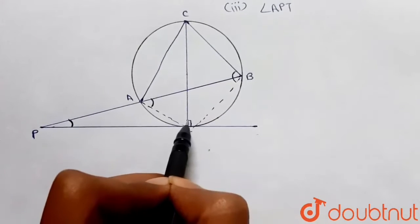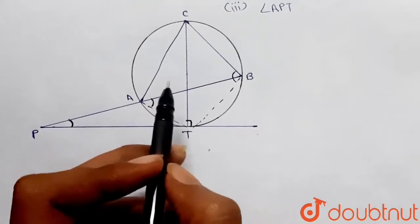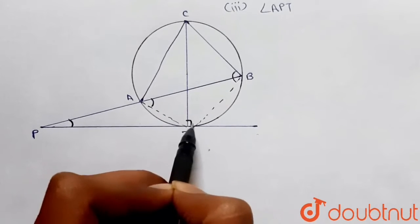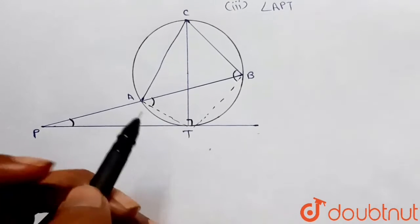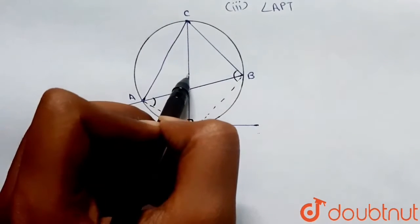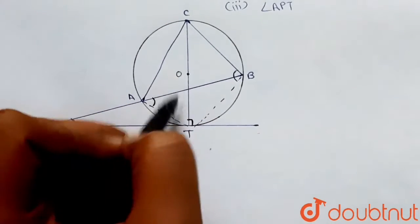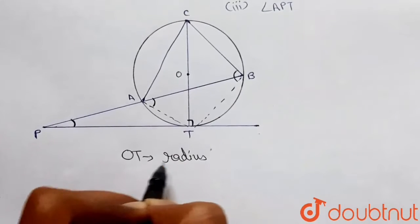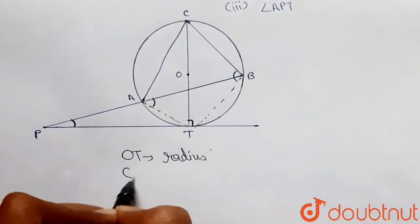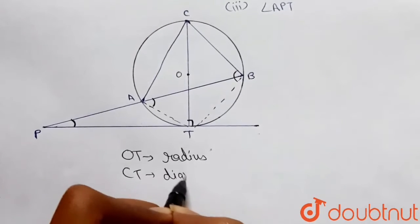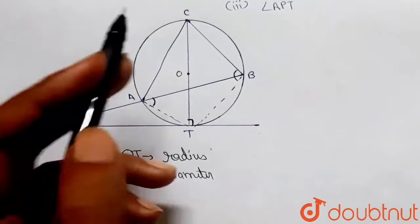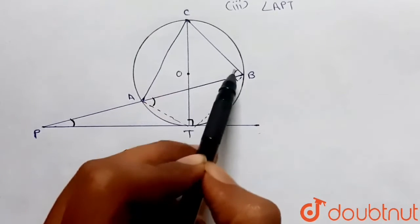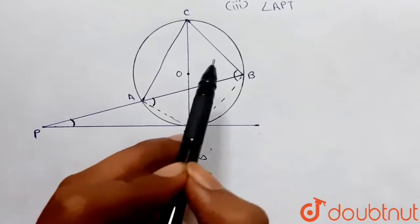In this figure, PT is a tangent, and we know that the radius of a circle makes an angle of 90 degrees with the tangent. So if PT is a tangent and this angle is 90 degrees, then OT must be the radius of this circle. And if OT is the radius, then CT must be the diameter of the given circle.